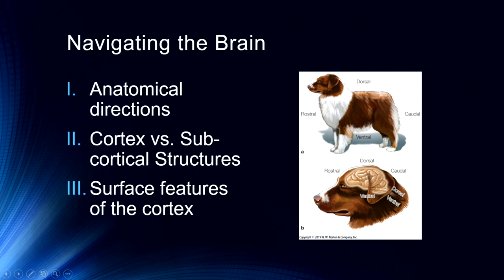Generally speaking, we talk about navigating the brain using anatomical directions, which are an artifact of the fact that these were all designed for animals that are on all fours. As you can see from this first view, the dorsal side of the brain and the dorsal side of the body and spine are not necessarily the same in humans. While the top of a dog is its dorsal side, and the top of its brain is its dorsal side, because we walk on two feet, the dorsal side of the brain is the top of our head, whereas the dorsal side of the spine is towards our back.